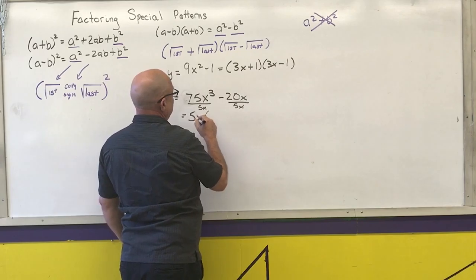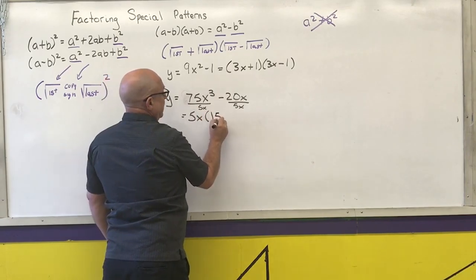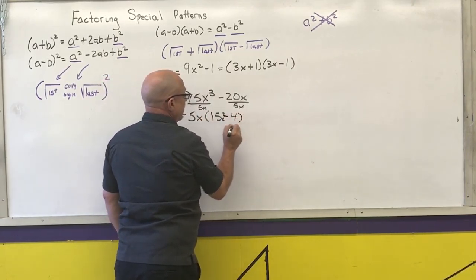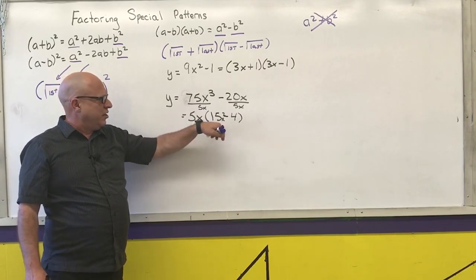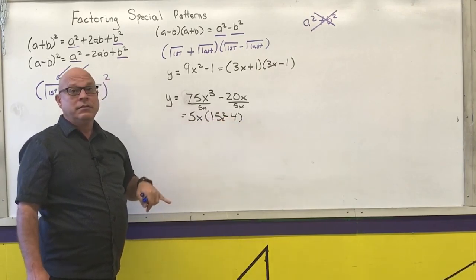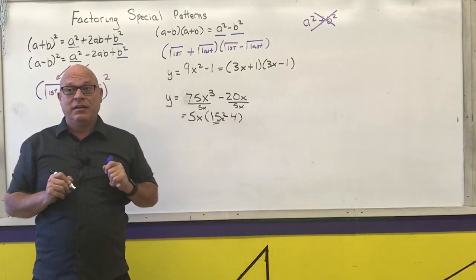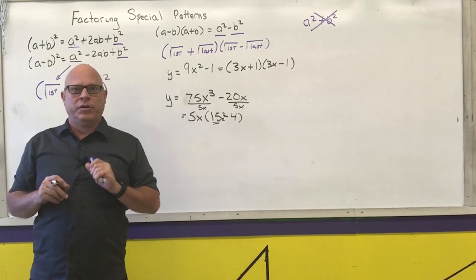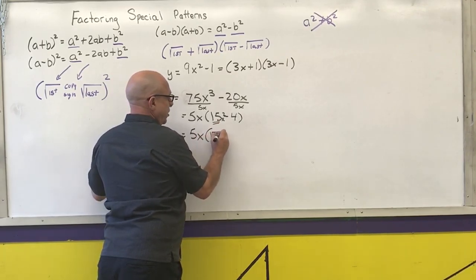That gives me 5x times (15x squared minus 4). I have something squared minus something squared. I want you to realize that 15 is actually the perfect square of the square root of 15. So I have 5x times (√15·x + 2)(√15·x − 2).